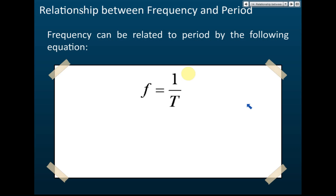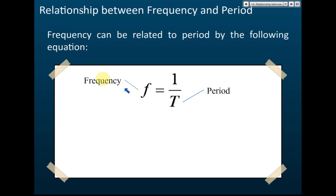The relationship between frequency and period is given by the equation f equals 1 over T, where f is the frequency and T is the period. Make sure you use the capital letter T for period, not the small letter t. We use small t to denote time in general, and capital T specifically to denote period.